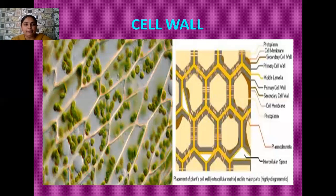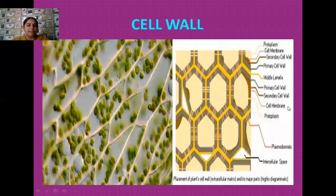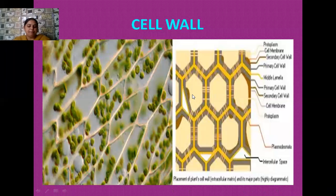Now regarding the chemical composition of the cell wall: in different types of organisms, for example in algae, the cell wall consists of galactans, mannans, and other different molecules. But in case of complex organisms such as plants, the cell wall is generally made up of cellulose, hemicellulose, and sometimes pectins and other proteins may also be constituents of the cell wall.